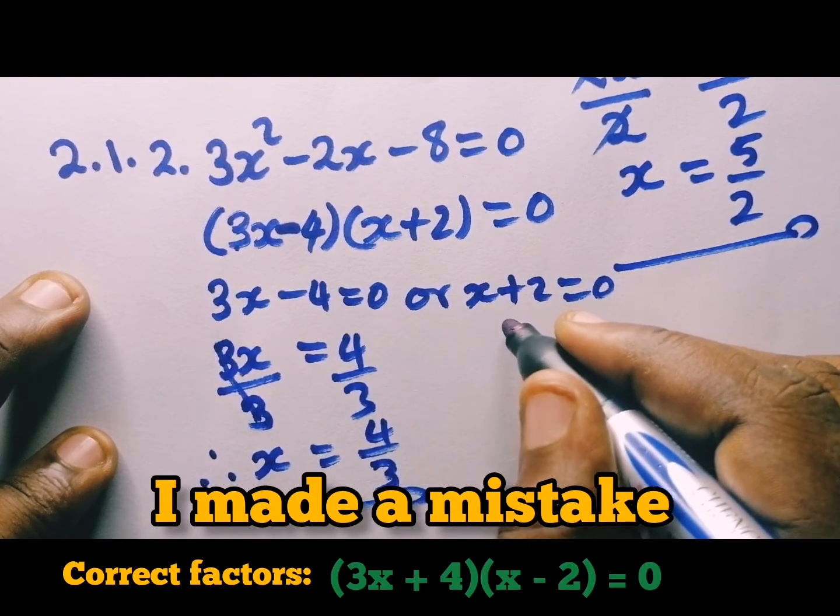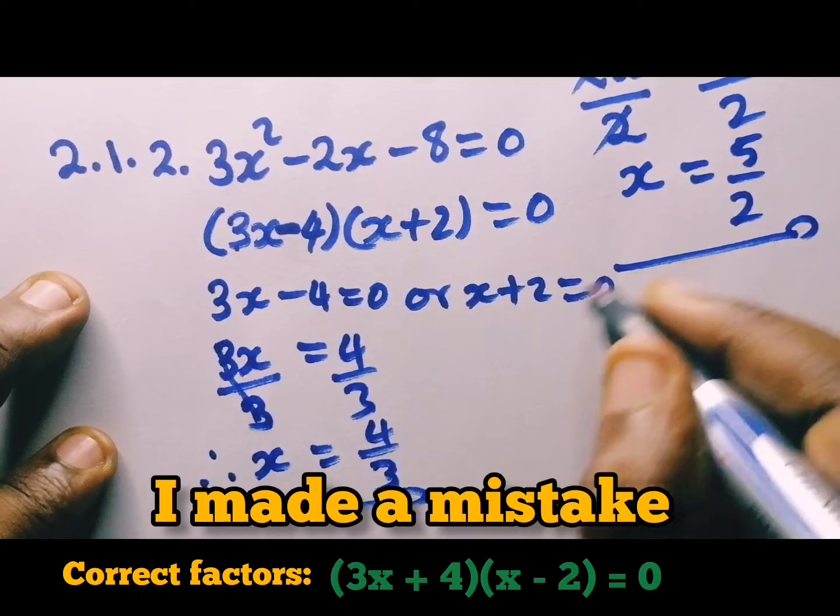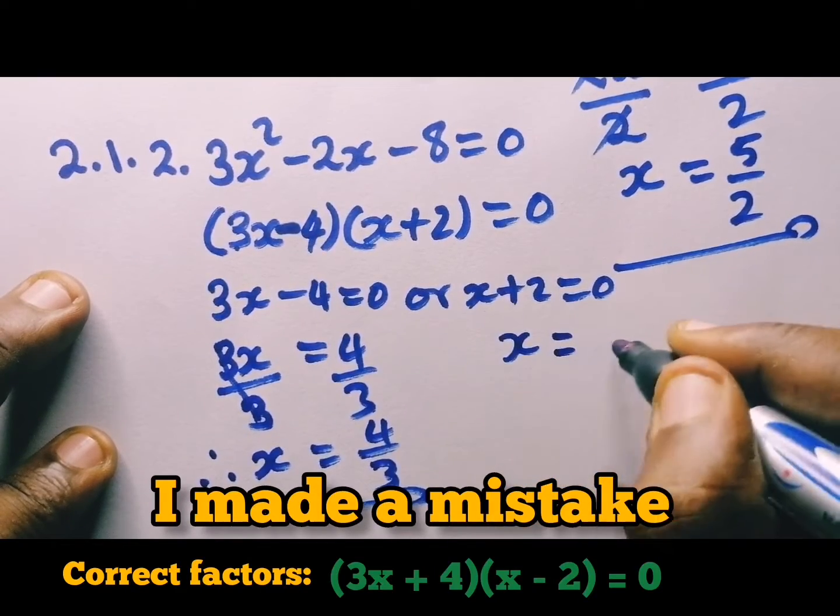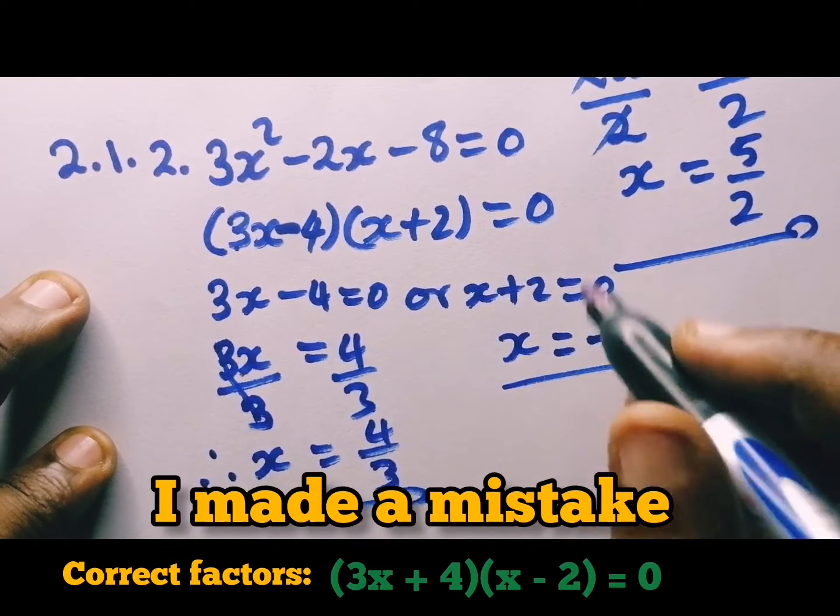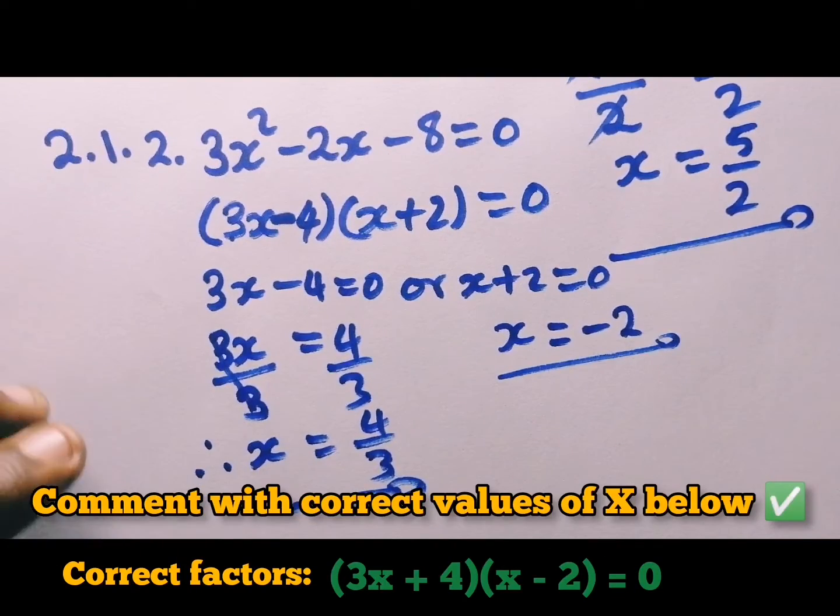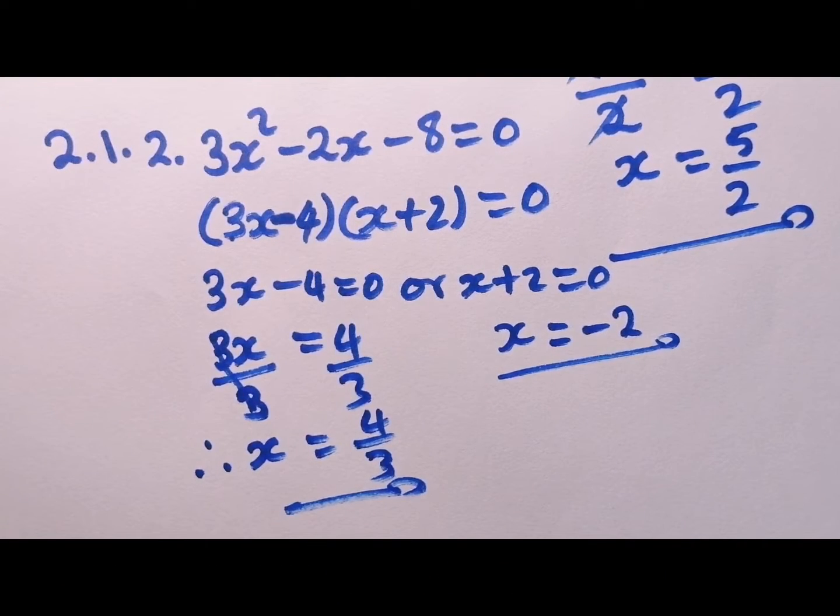The second one is simple. We just take this 2 to the other side. Then we have x equal to negative 2. Remember, we said the sign changes. The sign changes. Once you take the term to the other side of equal to sign, the sign will change. Let's check the next one.